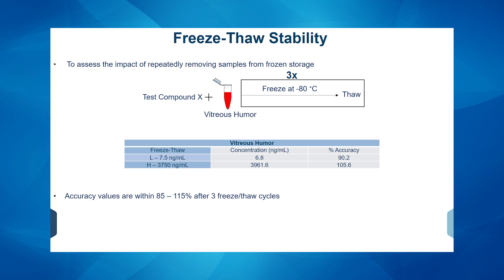Freeze-thaw stability is very important to assess what happens when you remove samples from frozen storage multiple times. We spiked test compound X in vitreous humor and subjected it to three freeze-thaw cycles at minus 80 degrees Celsius. We confirmed that accuracy was within 85 to 115 percent after three freeze-thaw cycles. As you can see in this data, values were within the acceptance criteria, confirming that samples remained stable even after three freeze-thaw cycles.